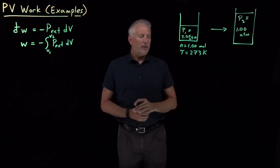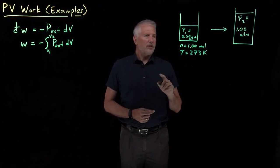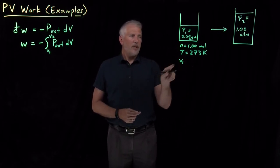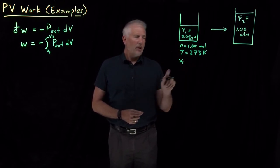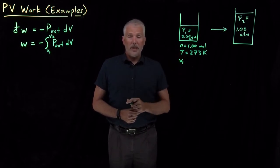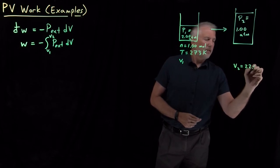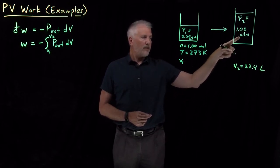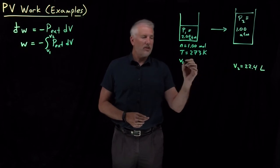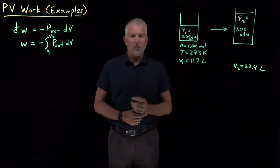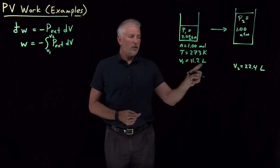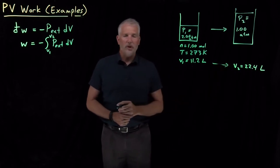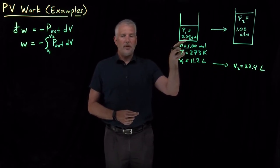We'll do that under a couple of different circumstances. We have N1, P1, T1. If the gas is ideal, we can calculate the initial volume. At 273 K, a mole of gas at STP gives us V = nRT/P. The volume of one mole of gas at 273 Kelvin and one atmosphere is 22.4 liters. If we double the pressure to two atmospheres, the volume is only 11.2 liters. So we're expanding from an initial volume of 11.2 liters to a final volume of 22.4 liters as the pressure drops from two atmospheres to one atmosphere.